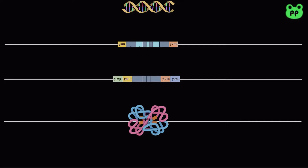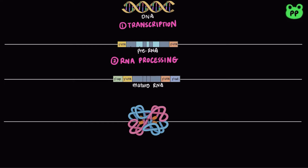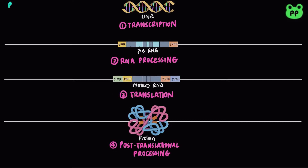Gene expression is regulated at four main levels: transcription, RNA processing, translation, and post-translational processing.